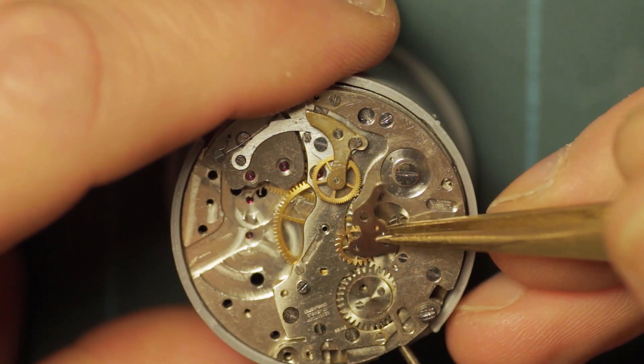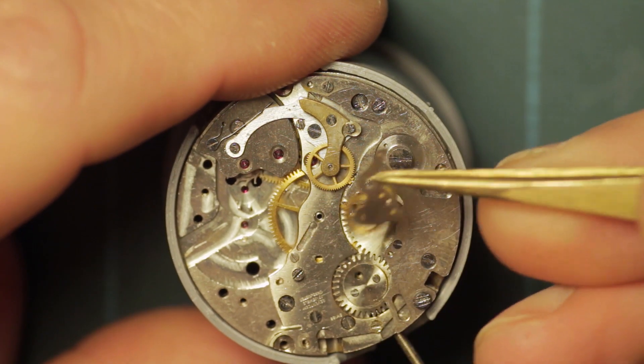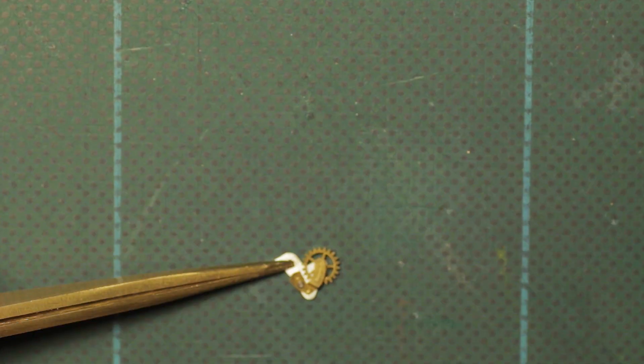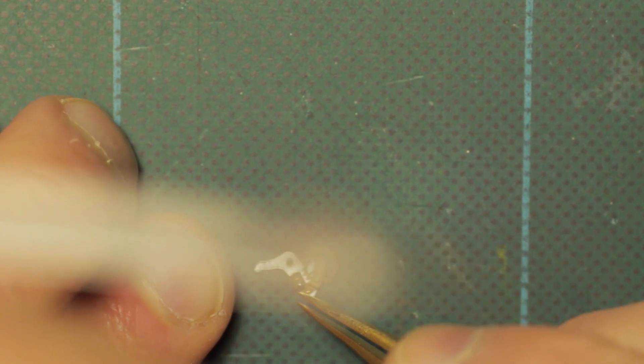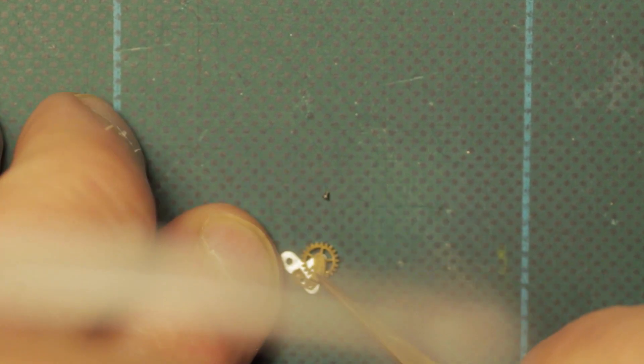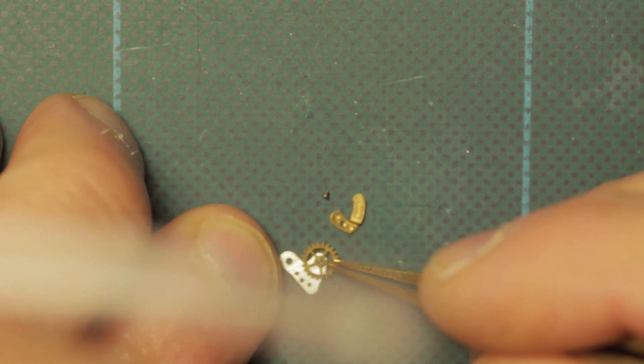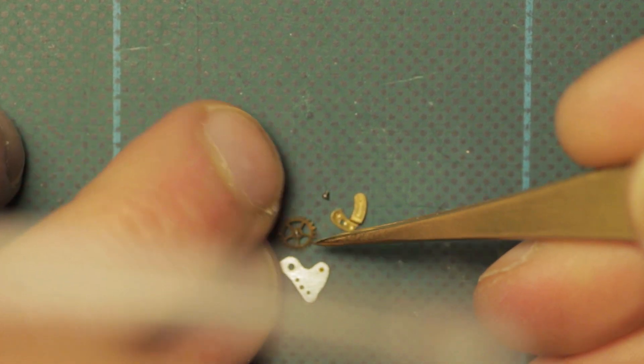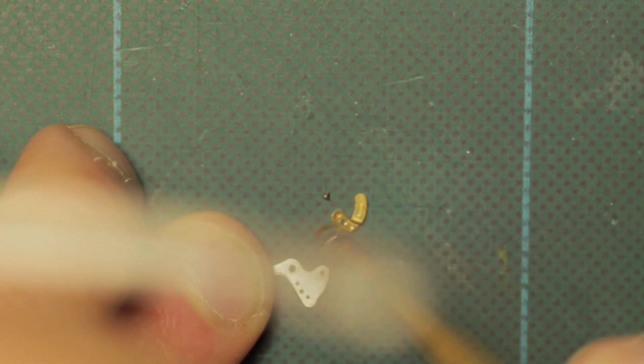And here the intermediate wheel assembly is removed, and then this is further stripped down on the bench separately into its component parts. Apologies for slightly obscuring the view there.